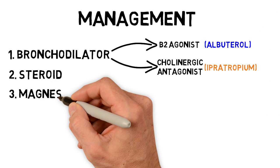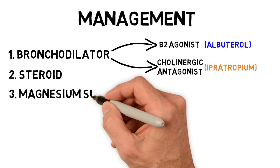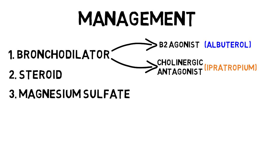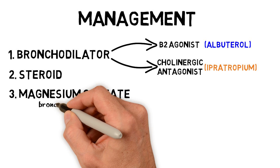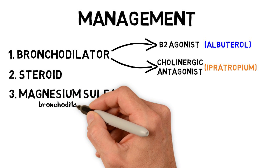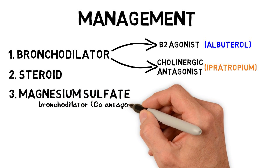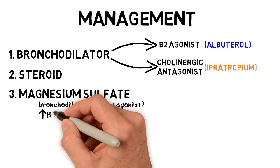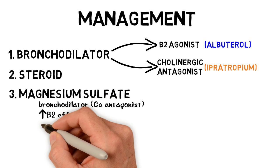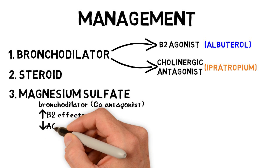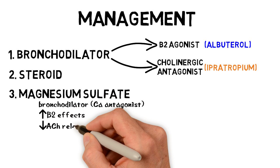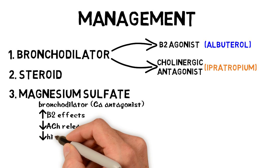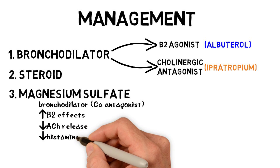The next step up is magnesium sulfate, which has several effects throughout the asthma pathways we've discussed. It promotes bronchodilation, presumably by acting as a calcium antagonist. It enhances the effects of beta-2 agonists like albuterol, impairs acetylcholine release, and decreases histamine release.